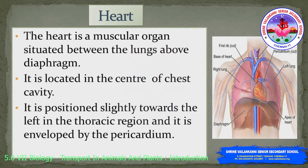We will now study the next part of the circulatory system, which is the heart. The heart is a fist-sized muscular organ situated in the chest between the lungs and above the diaphragm. It is located in the center of the chest cavity, positioned slightly towards the left in the thoracic region, and is enveloped by the pericardium.